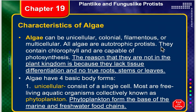There are some basic body forms of algae, and the first is going to be unicellular algae. If it is unicellular, it's one cell. Most of these are free-living, which means they're not parasitic. Collectively, we know our unicellular algae as phytoplankton. Phytoplankton is the base of our marine and freshwater food chain — that's really important, so take note of that.